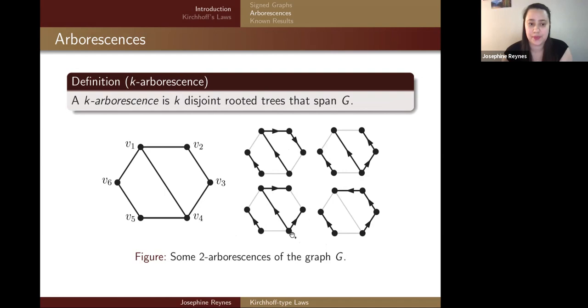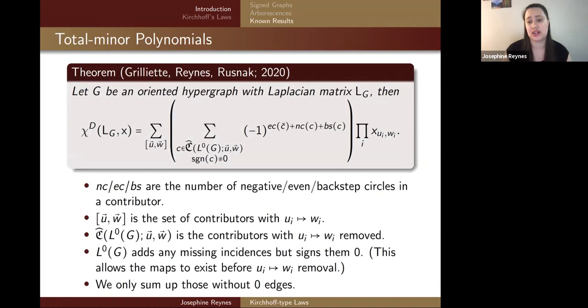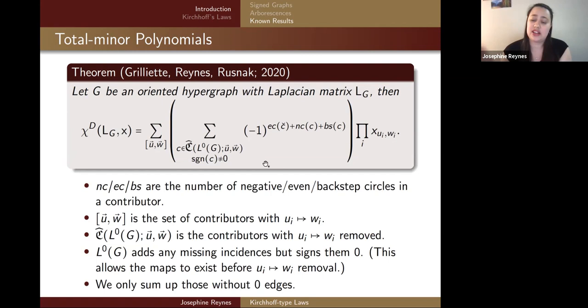I'd also like to go over a theorem called the total minor polynomial. If G is an oriented hypergraph with a Laplacian matrix, you can calculate a polynomial where you subtract an X from every coordinate — it's like a characteristic polynomial but with an X at every entry in the matrix, and then you take the determinant. You can sum over a particular figure called a contributor, over the number of negative even and backstep circles in that contributor, where you remove a particular connection. This gives the finest possible sum of the entire graph in terms of contributors.